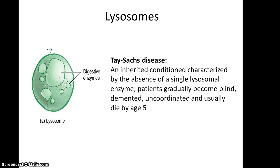There is an inherited condition called Tay-Sachs disease, and it has been discovered that this disease is caused by the absence of a single lysosomal enzyme. With just one enzyme missing from the many digestive enzymes found in lysosomes, a patient born with this condition will gradually become blind, demented, and uncoordinated, and usually dies by age 5.